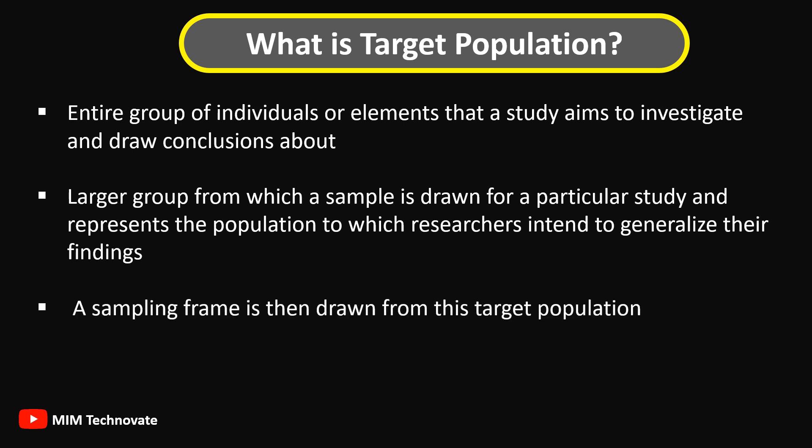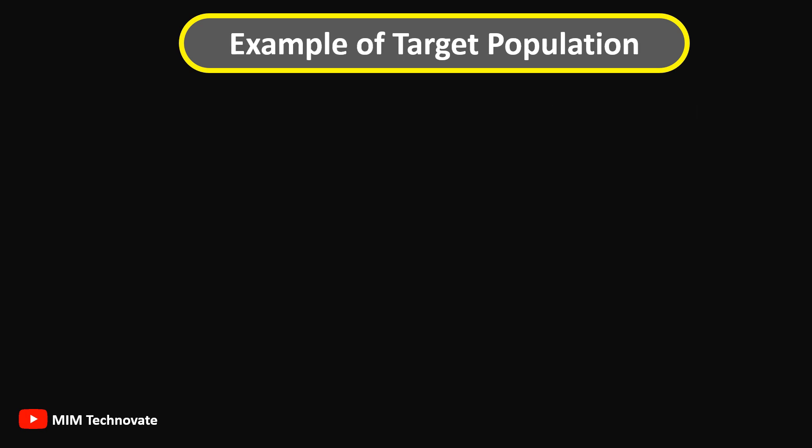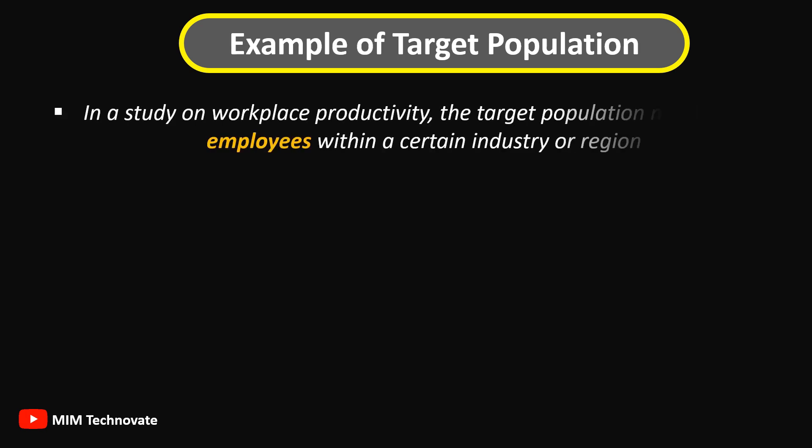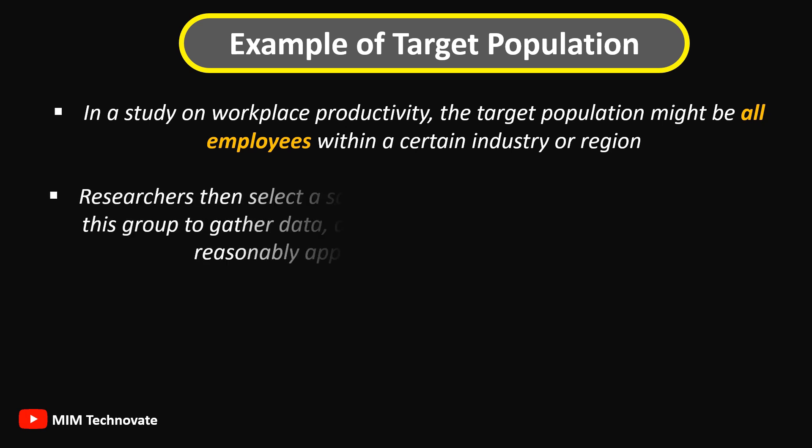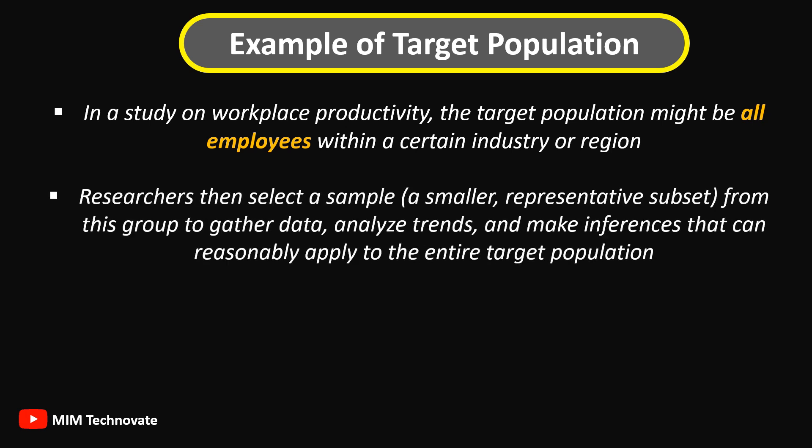A sampling frame is then drawn from this target population. For example, in a study on Workplace Productivity, the target population might be all employees within a certain industry or region. Researchers then select a sample — a smaller representative subset from this group — to gather data, analyze trends, and make inferences that can reasonably apply to the entire target population.